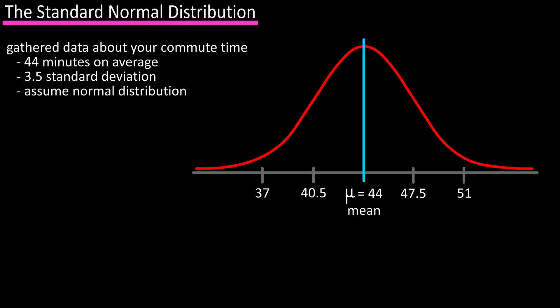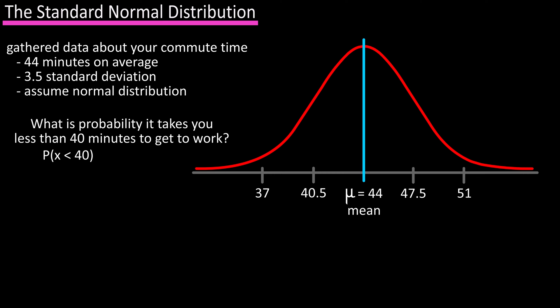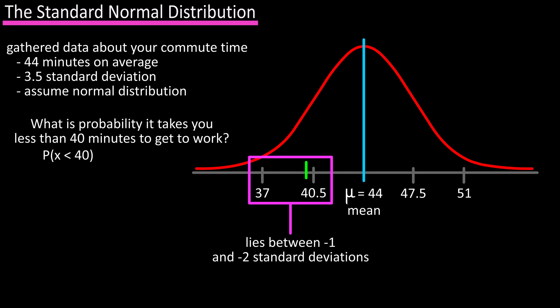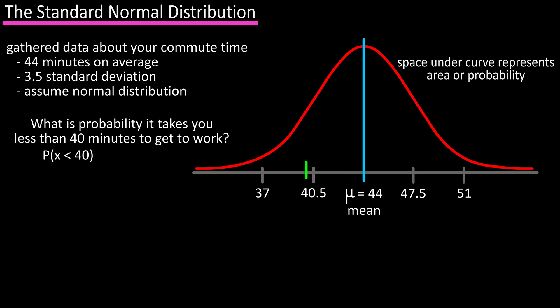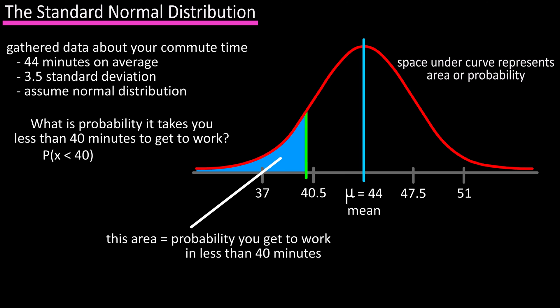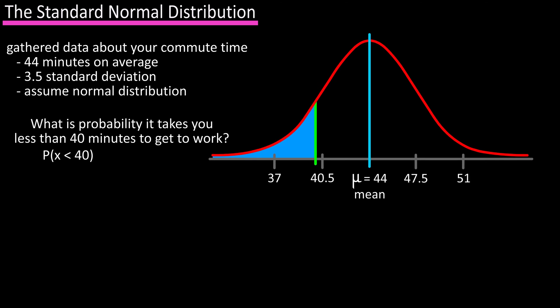Now let's say we want to know the probability that it takes you less than 40 minutes to get to work tomorrow. 40 on the graph is about here, so it lies between negative 1 and negative 2 standard deviations from the mean. The space under this curve represents an area or probability, so if we can calculate the area from less than 40 minutes to the left of the line, that will be the probability that you get to work in less than 40 minutes. This is where z-scores come in.